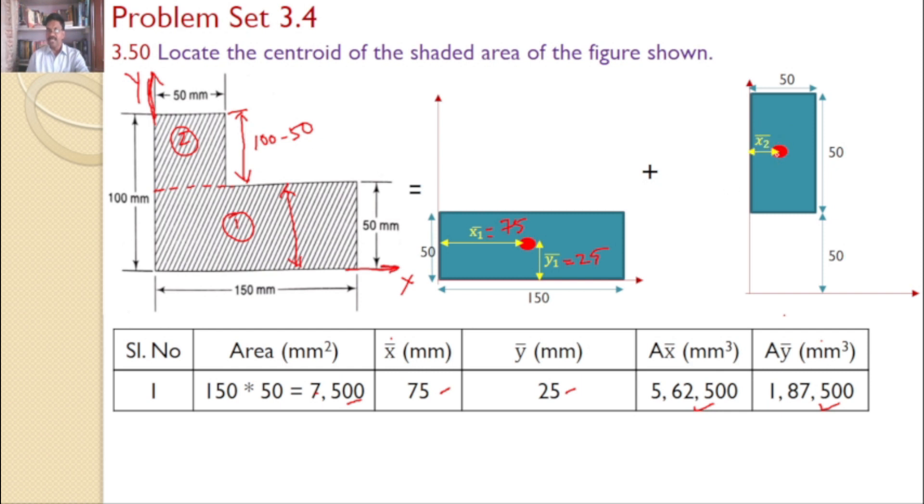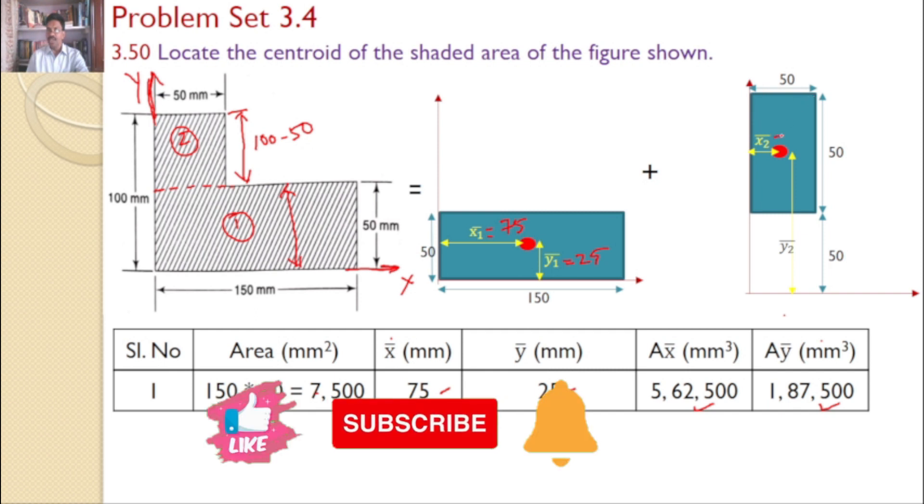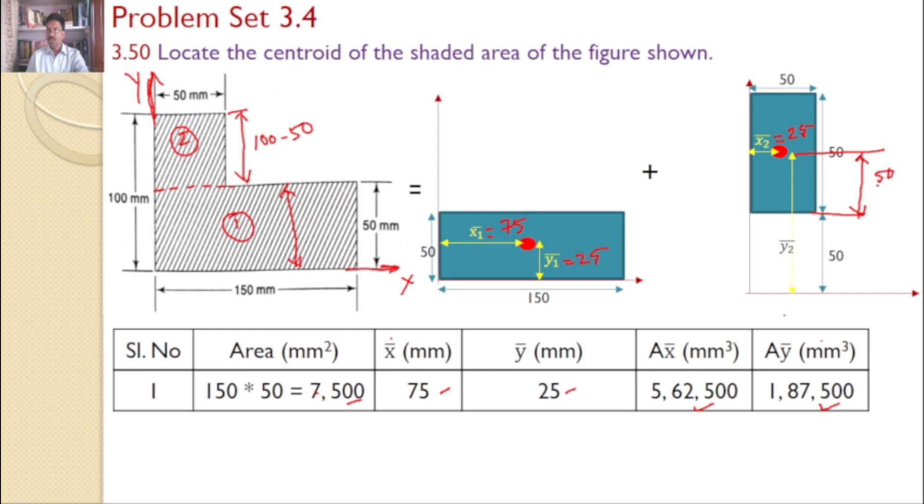This is the centroid, and this distance is x2 bar, the distance of the centroid from y-axis, and this distance is y2 bar, the distance of the centroid from the x-axis. Now clearly we can see the total width equals 50, so x2 bar equals 50 by 2, that is 25. But coming to y2 bar, I can only find this distance equals 50 by 2, that is 25, but the total y2 bar equals 50 plus 25. So y2 bar equals 75.